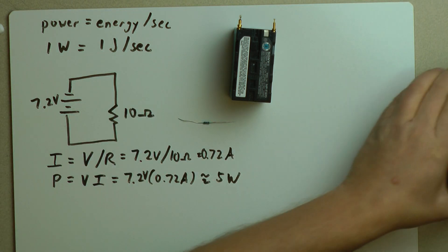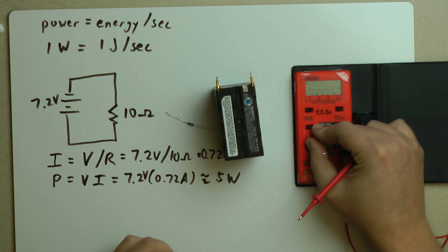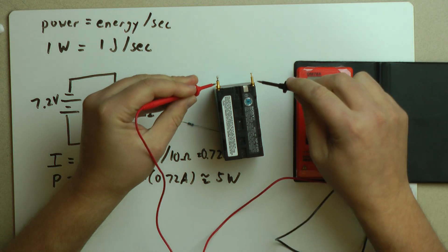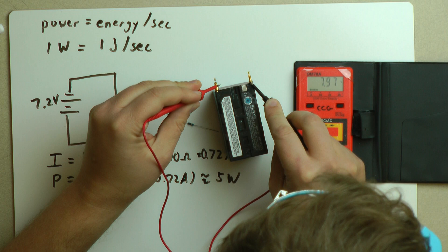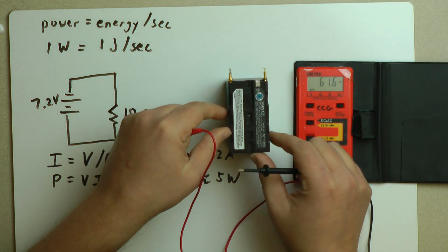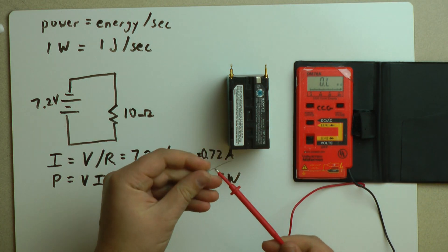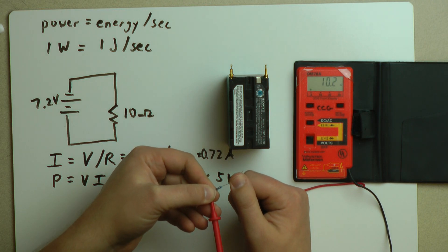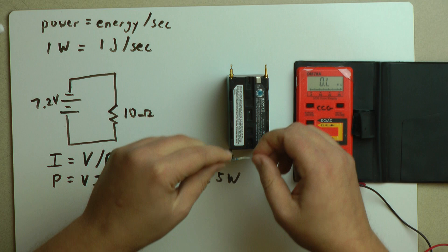First of all, let me actually show you that I have a 7.2 volt battery. Actually, it's going to read high because it's fully charged, so it's reading around 7.9. And I'll show you that I actually have a 10 ohm resistor here. That's brown, black, black. The gold and red are tolerances. There we go, 10 ohms. Now, let's see what happens.